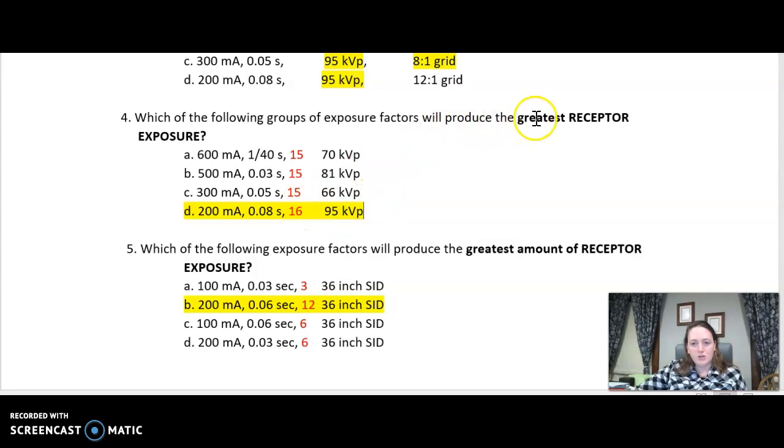Any time it says greatest receptor exposure, calculate out your MAS, go with the biggest MAS. If these were both 16, I would definitely still stay with this one because of the 95 KVP will give me more receptor exposure than the 66 KVP. Just for an example.